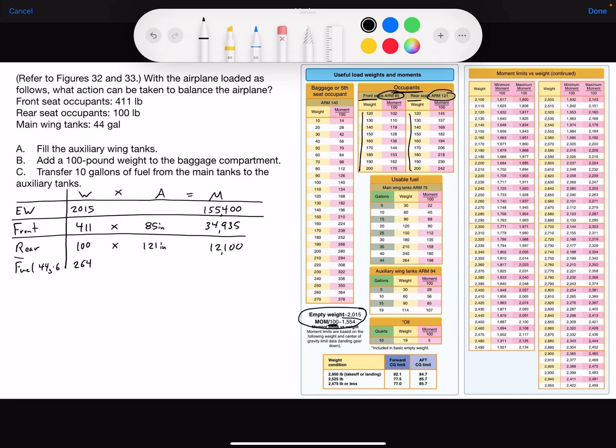And for fuel, we have 264 pounds. Looking at fuel on the table here, main tank. Here we have the 44 gallons, 264 pounds, or a moment of 198 hundreds. Or we can use the arm of 75. So weight times arm of 75 inches gives us a moment of 19,800.